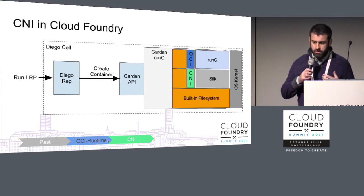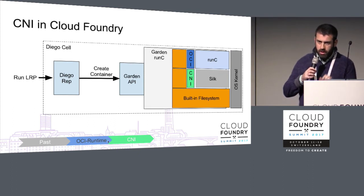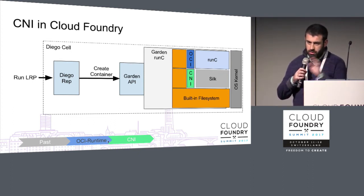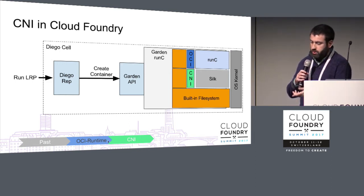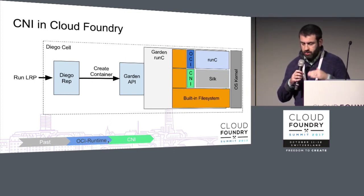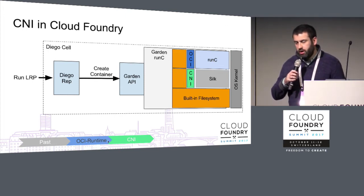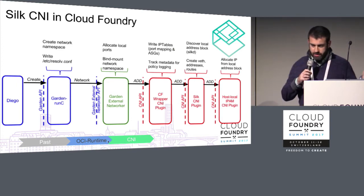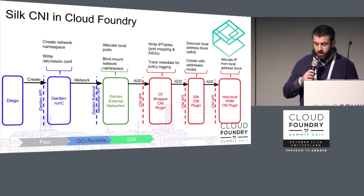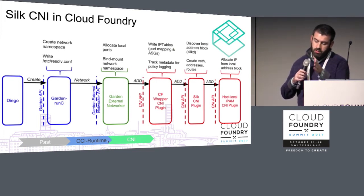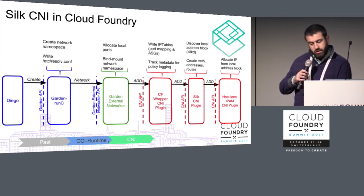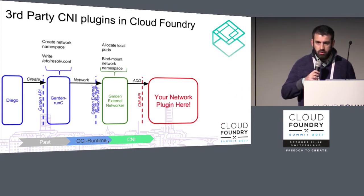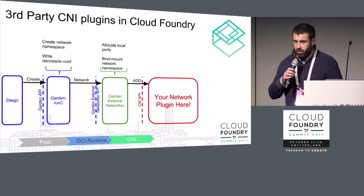Within Cloud Foundry, adopting CNI let us reduce the size of Garden again by removing built-in networking from Garden Linux. There's now a thin layer that calls out to CNI, and the CNI plugin does the hard work. This lets us swap in various network plugins. What's pictured is Silk — the batteries-included core CNI plugin designed for Cloud Foundry, easy to operate and designed to work with BOSH. The full stack has Diego calling the Garden API, Garden-runc calling a Garden external networker component, which exposes the CNI API, with swappable CNI plugins on the right — enabling third-party network solutions to integrate into Cloud Foundry.